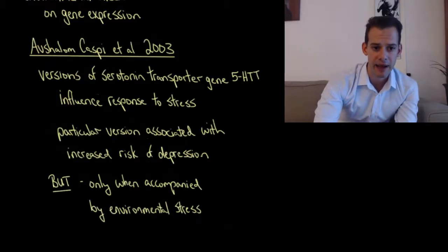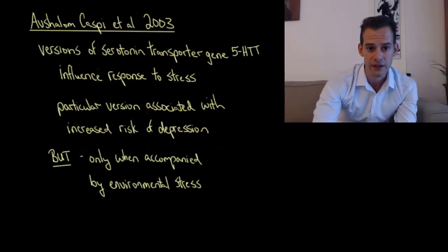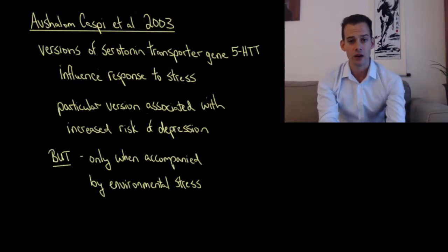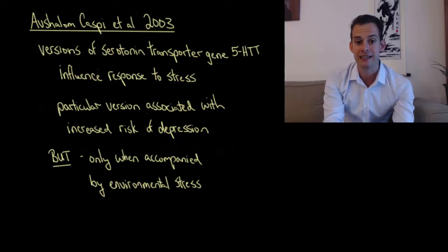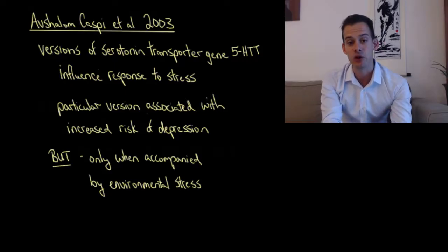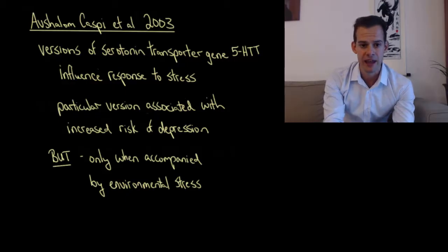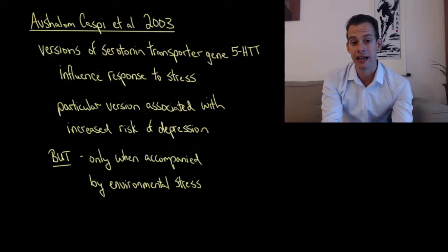This can be demonstrated in a study by Avshalom Caspi and colleagues in 2003. This was a longitudinal study that looked at young adults in New Zealand over the course of five years. Caspi and colleagues were looking at different versions of a promoter section of a serotonin transporter gene, 5-HTT gene, and the influence in this gene on responsiveness to stress.